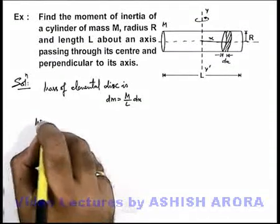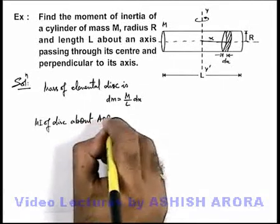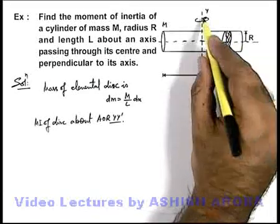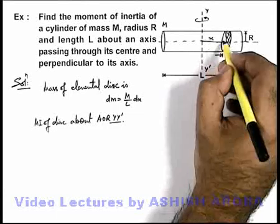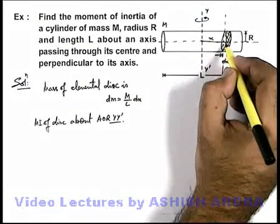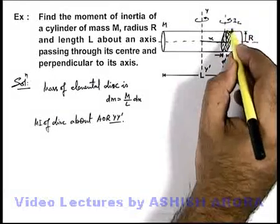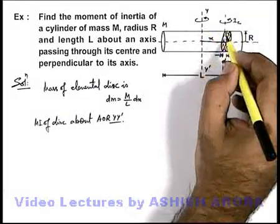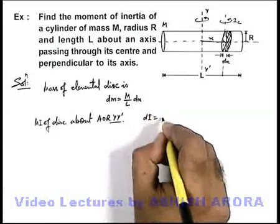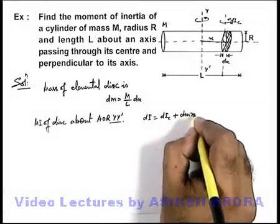Now we find out the moment of inertia of the disc about the axis of rotation y-y'. For calculation of moment of inertia of the disc about this axis, we use the parallel axis theorem, in which first we consider an axis parallel to y-y' passing through the centre of the disc. If the moment of inertia about this axis is Ic, then about y-y' it can be written as dI = dIc + dm·x².